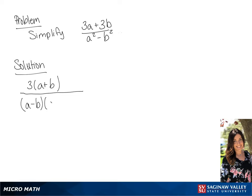And in the bottom, we can factor this to a minus b times a plus b. Since a plus b over a plus b is 1, we can cross those out. So we get a final answer of 3 over a minus b.